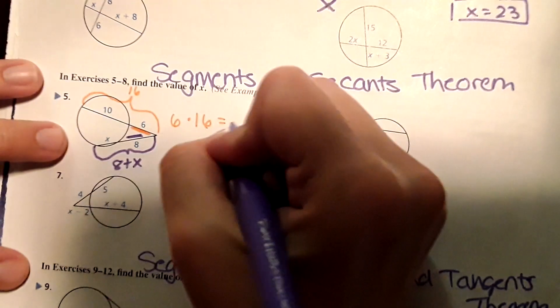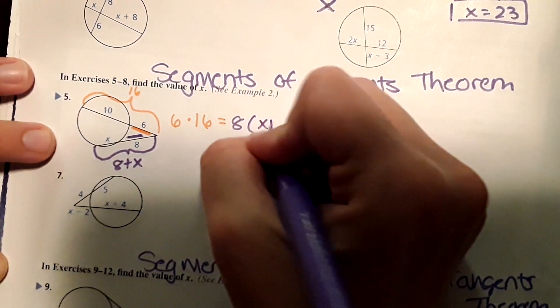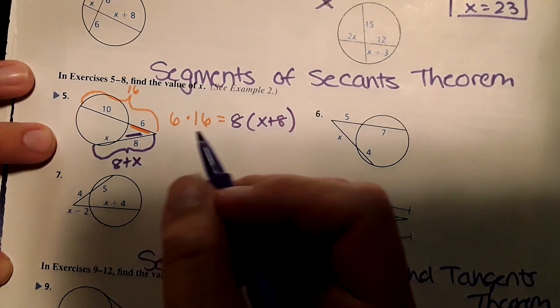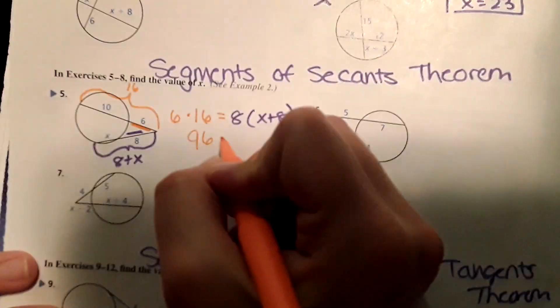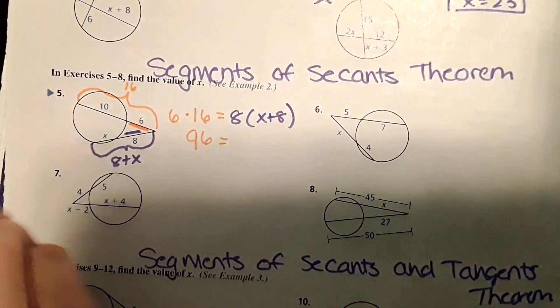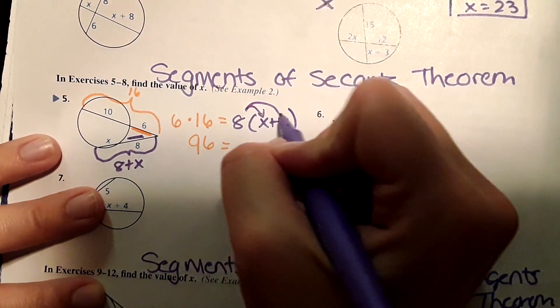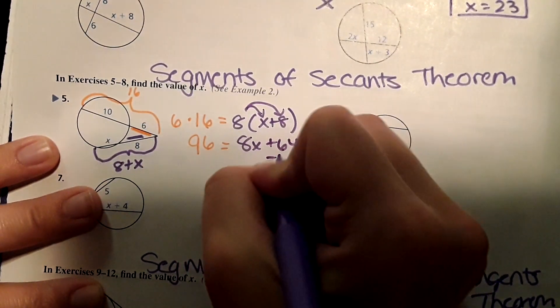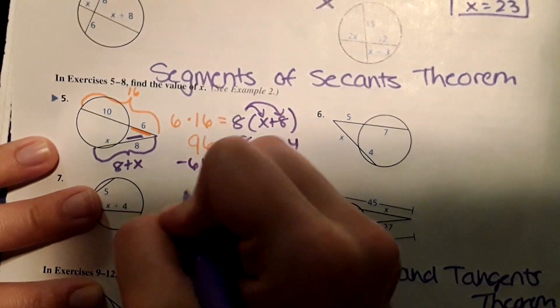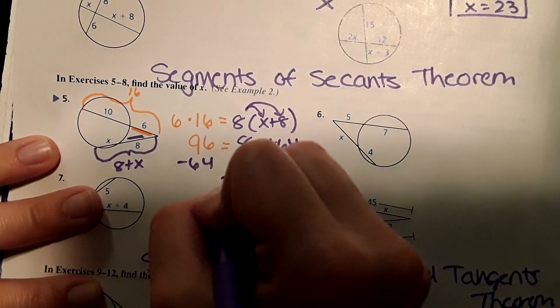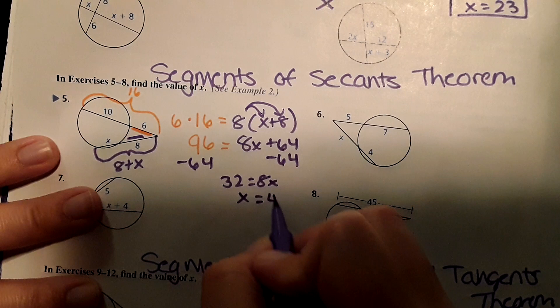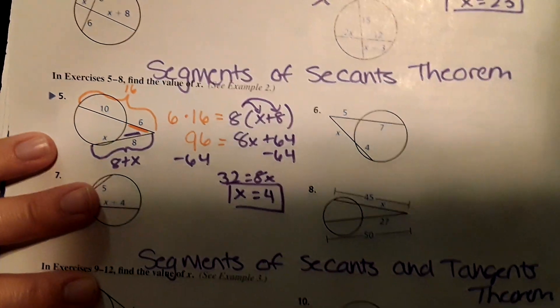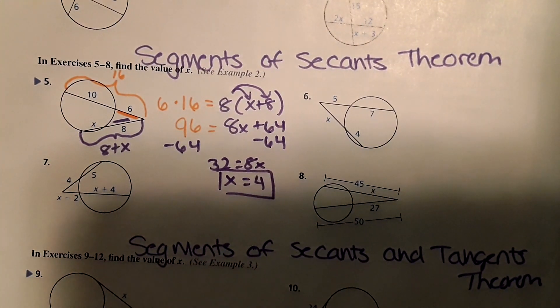6 times 16, we have 96 equals—and then I distribute the 8 to both of those terms—we get 8X plus 64. Continue solving here, and X equals 4.